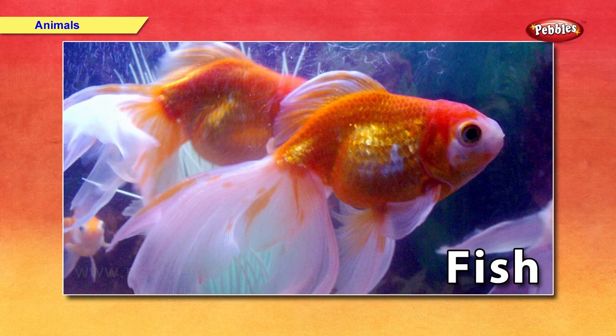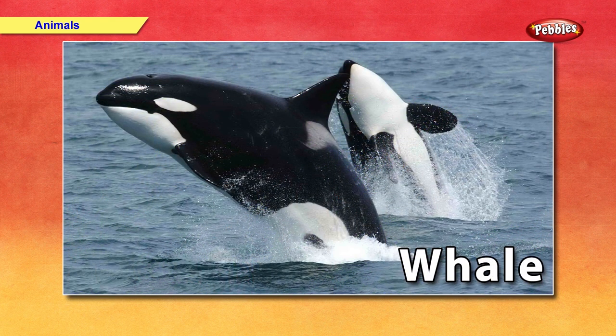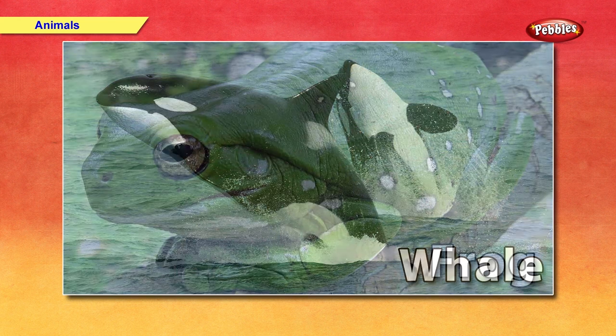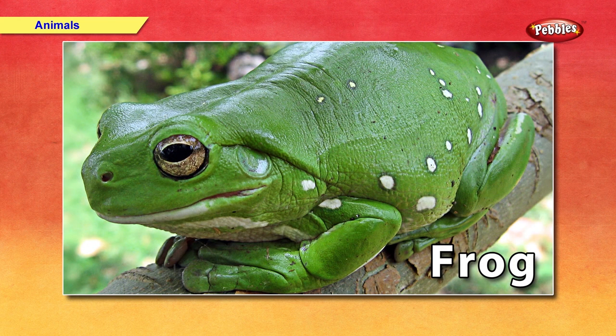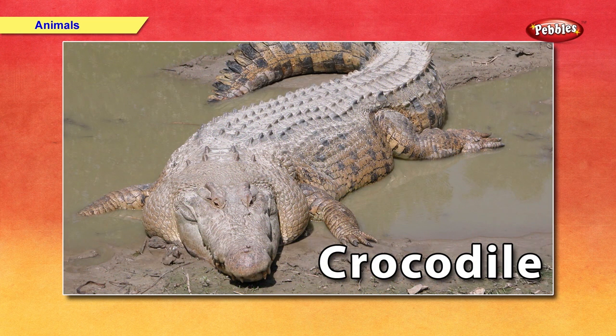Now let us take a look at water animals in detail. Whale — this is a fish. It cannot live without water. People use fish as food. Whale is the largest water animal. Frog — it can live in water as well as on land. Crocodile — it is a large animal with powerful jaws. They are generally found in rivers and considered dangerous.